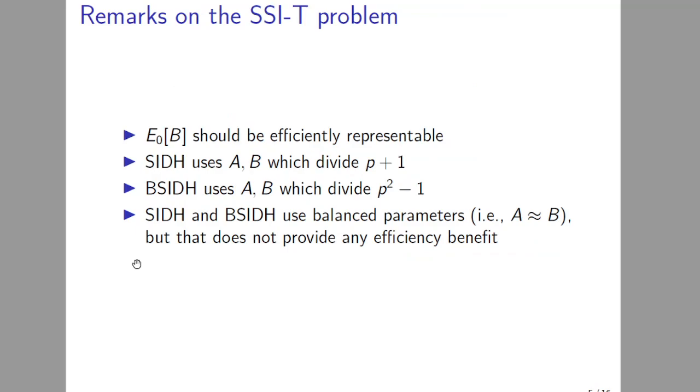Some remarks: For this problem to truly make sense, you need the B-torsion to be efficiently representable, which you can do in many ways. You could choose B to be power-smooth, but most systems use special primes to make sure that the B-torsion is defined over small extension fields. In SIDH, A and B both divide p+1, and in B-SIDH, which is a variant of SIDH, A and B are chosen to divide p^2-1. In both SIDH and B-SIDH, balanced parameters are used, meaning A is roughly the same size as B, but that doesn't provide any efficiency benefit. It just comes from the fact that you want the same security level for Alice and Bob.